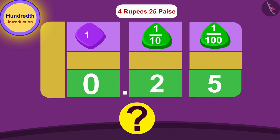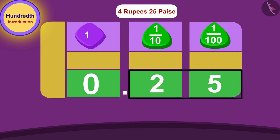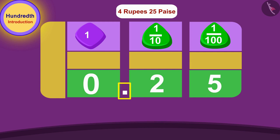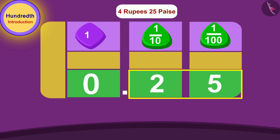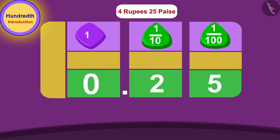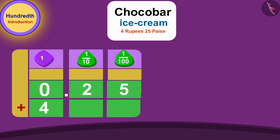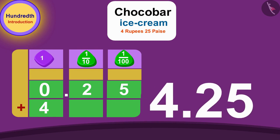Do you know how we read the number written in the hundredth part? We will always read the number written in the hundredth part after the decimal point by speaking its digits. Like, the number written here becomes 0.25. Now, if we add 0.25 to 4, we get 4. In this way, we can write the new price of Chocobar ice cream as 4.25 rupees using the decimal point.